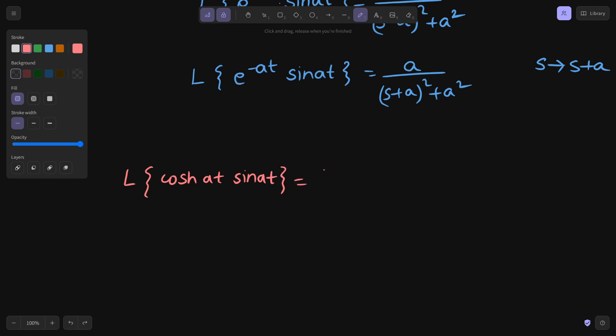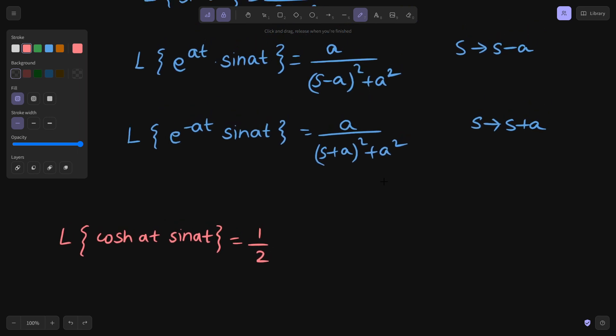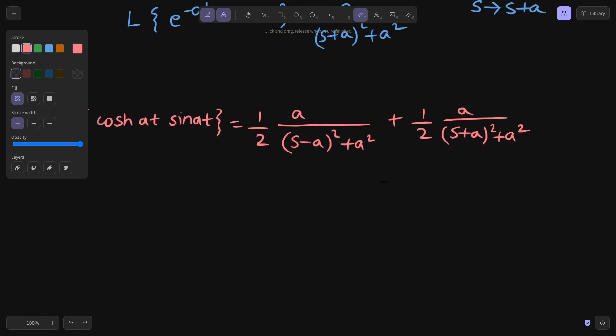So this is equal to 1 by 2, Laplace of e power at sin at came out to be a divided by s minus a whole square plus a square, and the other one came out to be a divided by s plus a square plus a square.